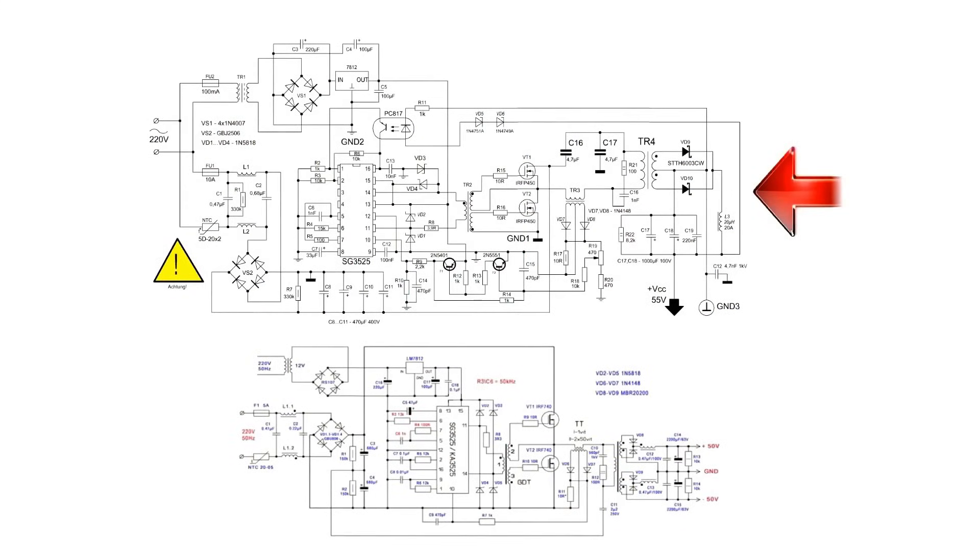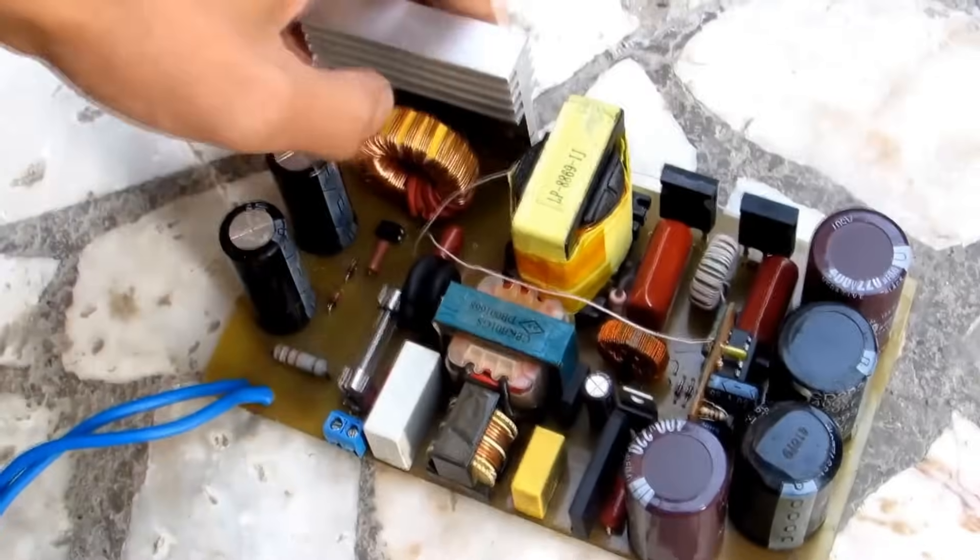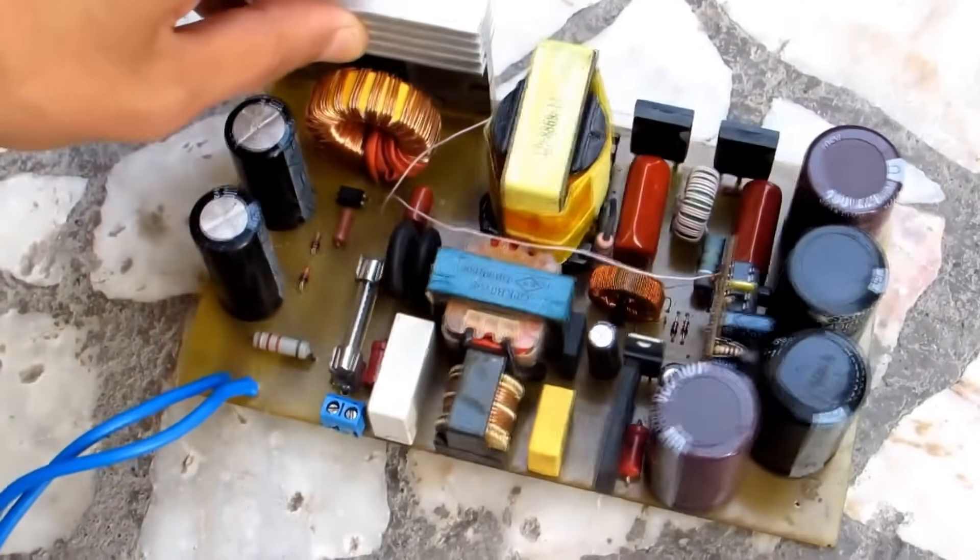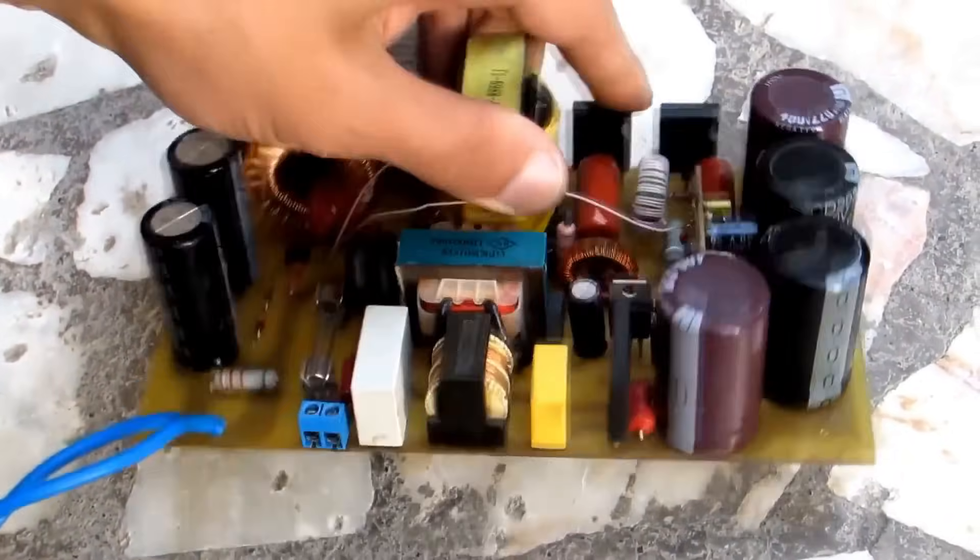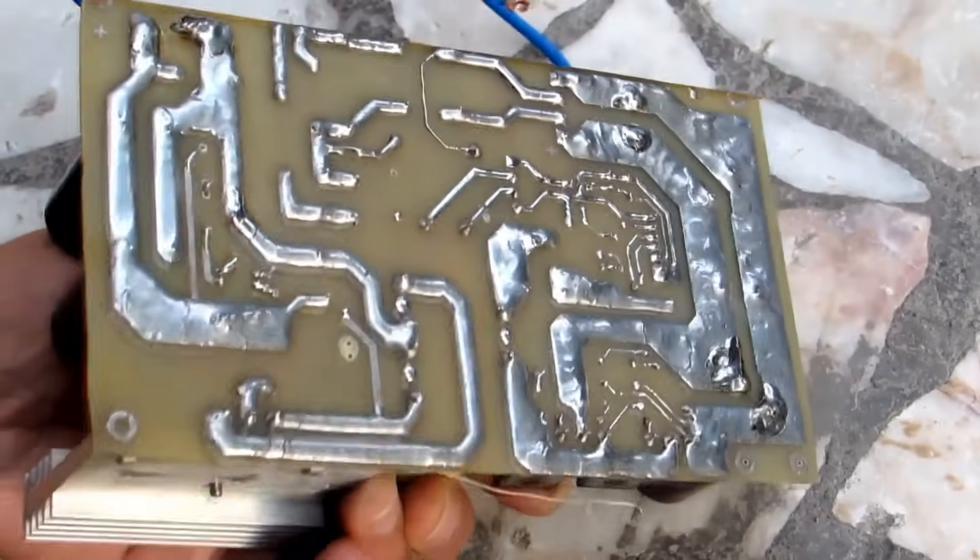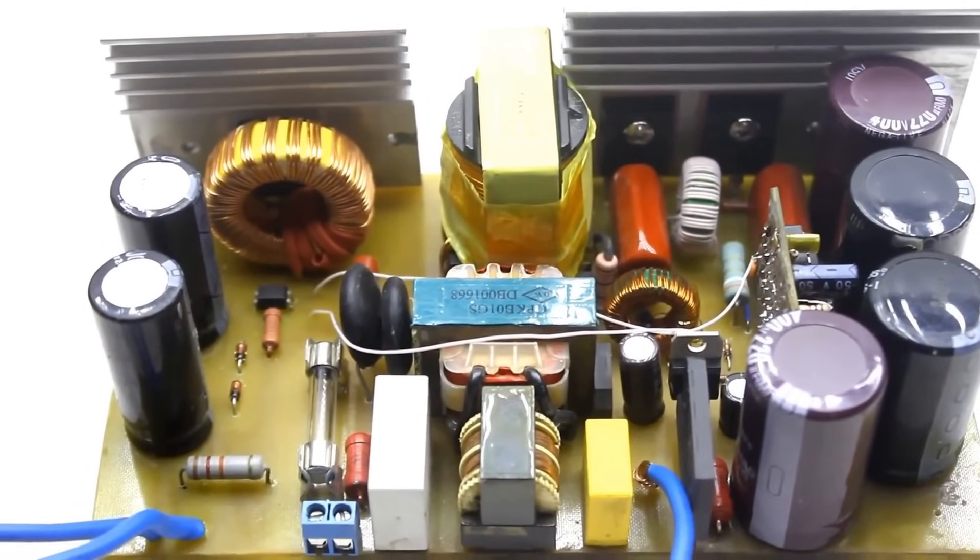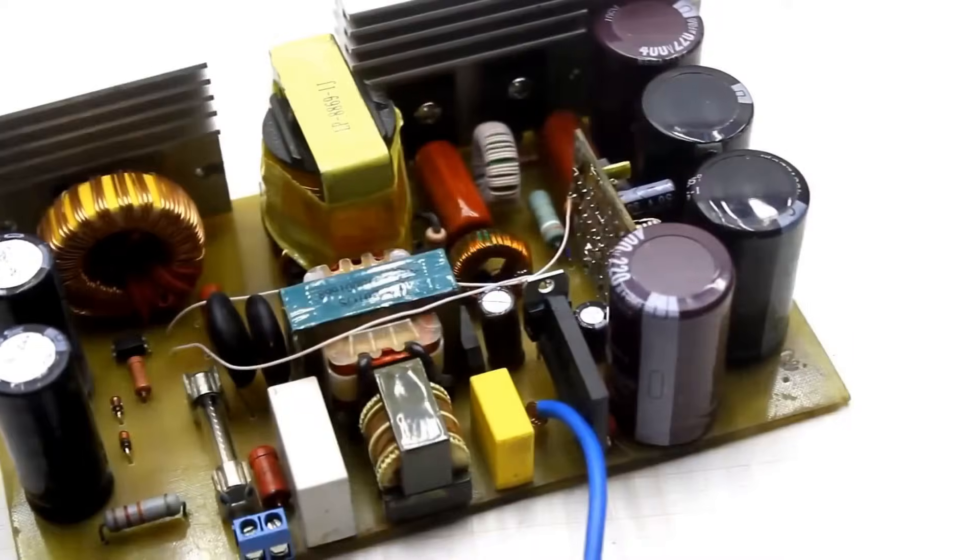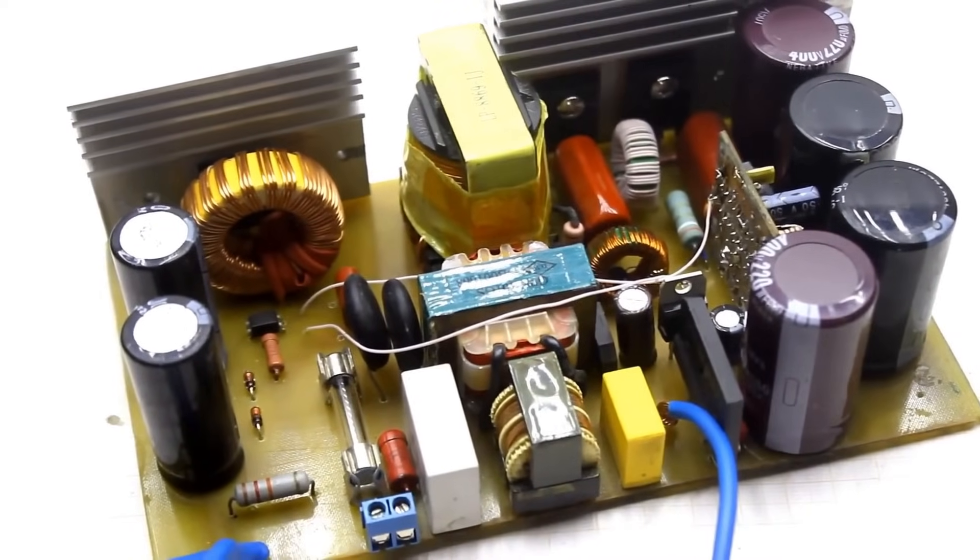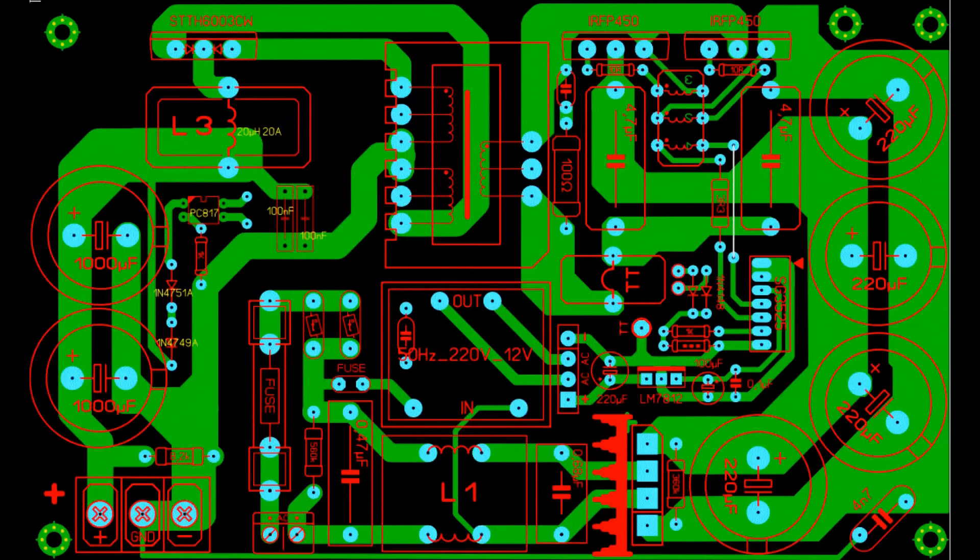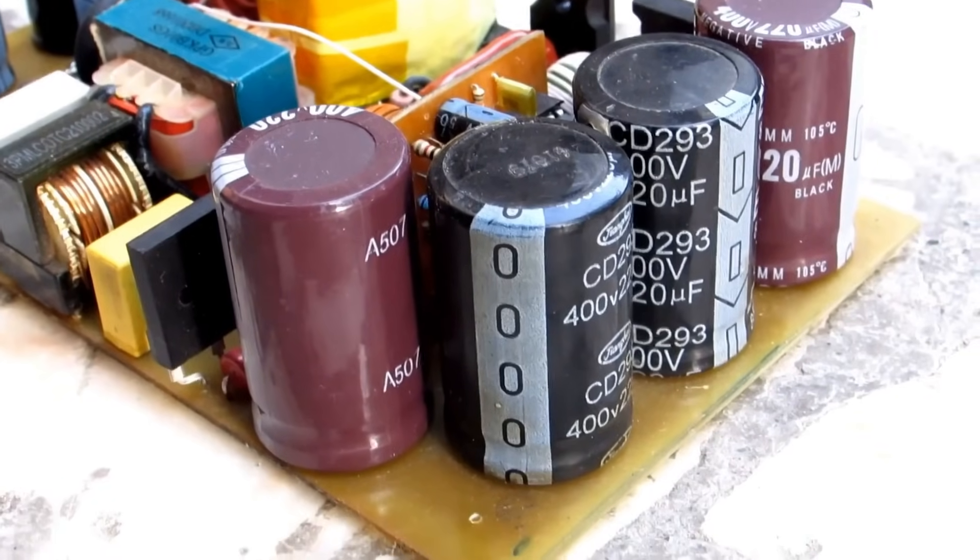My version slightly differs from the original schematic in terms of the chip's circuitry, the presence of output voltage stabilization, and the type of output rectifier. In the description below this video, you will find an archive. I highly recommend studying it if you want to assemble this power supply. Links to purchase some components can also be found in the description. And one more thing - some units or component values in the schematic may differ from those on the board. This is quite acceptable and does not affect the overall operation of the circuit.